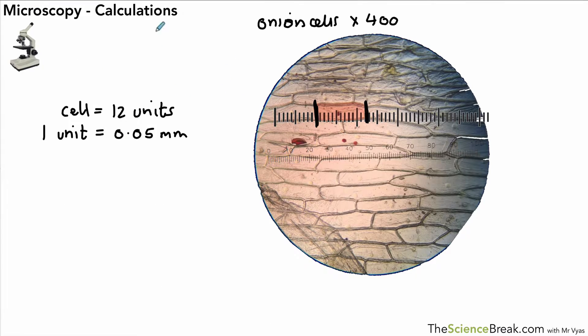Then it's quite straightforward to work out the size of the cell. We just do the 12 units that we measured multiplied by 0.05 millimeters. Try and keep the equal signs neat and underneath each other. So 12 times 0.05 gives us a size of 0.6 millimeters. That's one way we can estimate the size of cells using an eyepiece graticule and a millimeter scale.